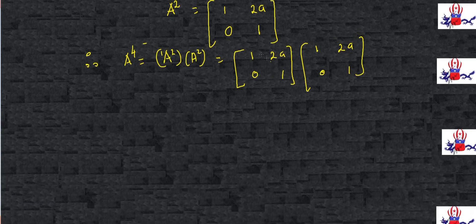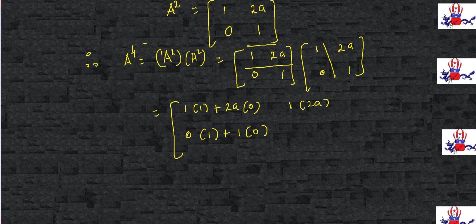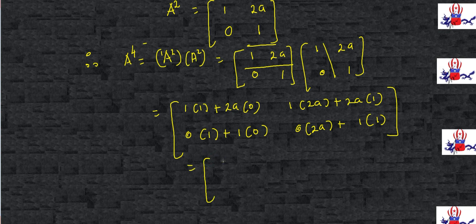This is row multiplied with a column. It's going to be: 1 multiplied with 1, plus 2a multiplied with 0; then 0 multiplied with 1, plus 1 multiplied with 0; then 1 multiplied with 2a, plus 2a multiplied with 1; then 0 multiplied with 2a, plus 1 multiplied with 1. This gives 1, 0, 4a, and 1.